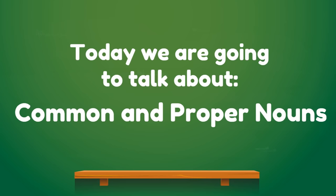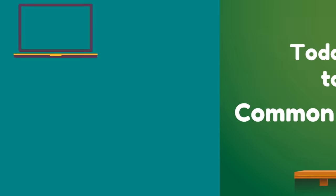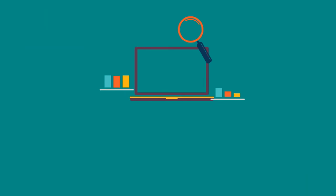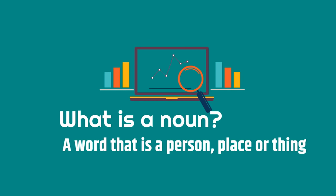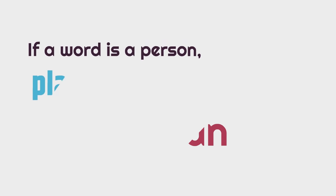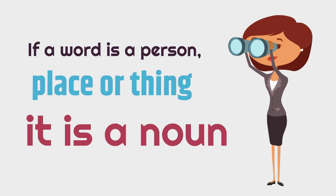Today we're talking about common and proper nouns. But before we learn that, we have to know what a noun is. A noun is a word that is a person, place, or thing. In other words, if a word is a person, place, or thing, it is a noun.